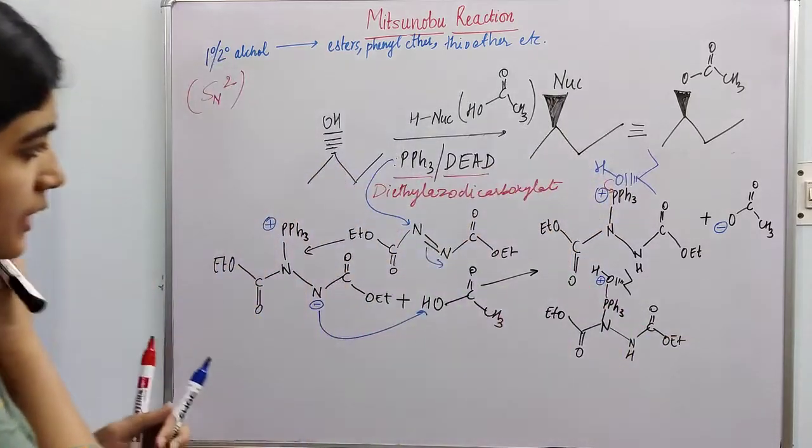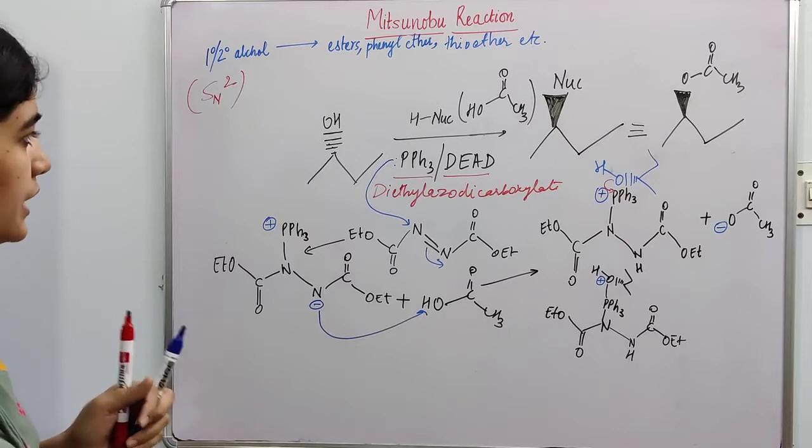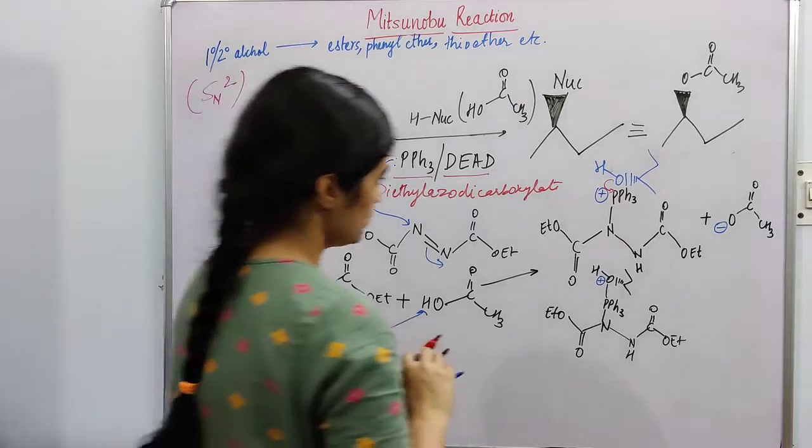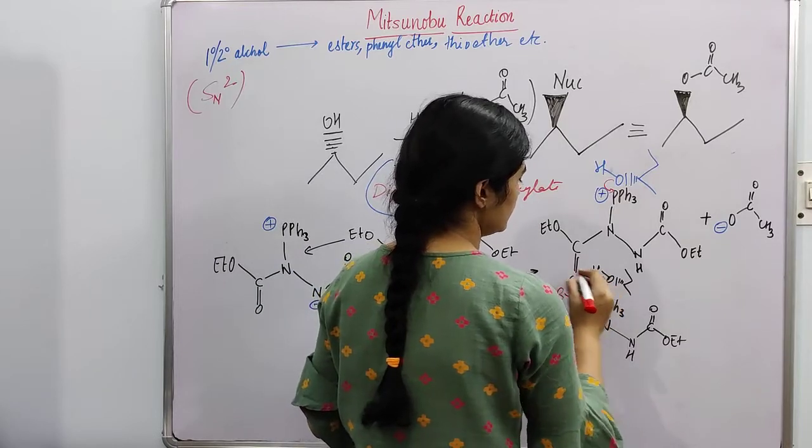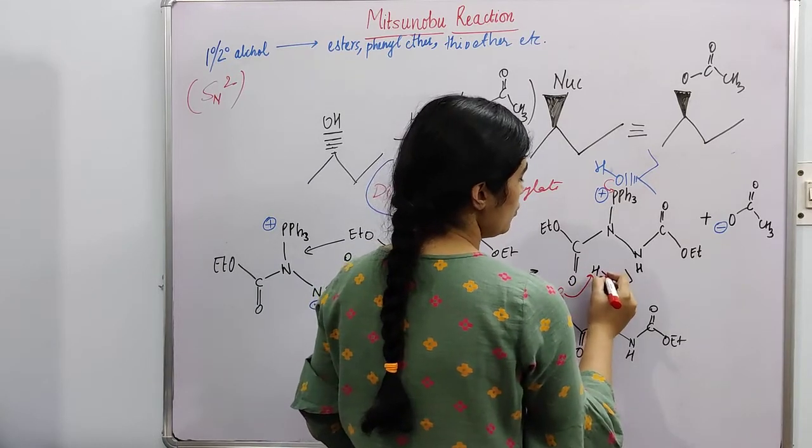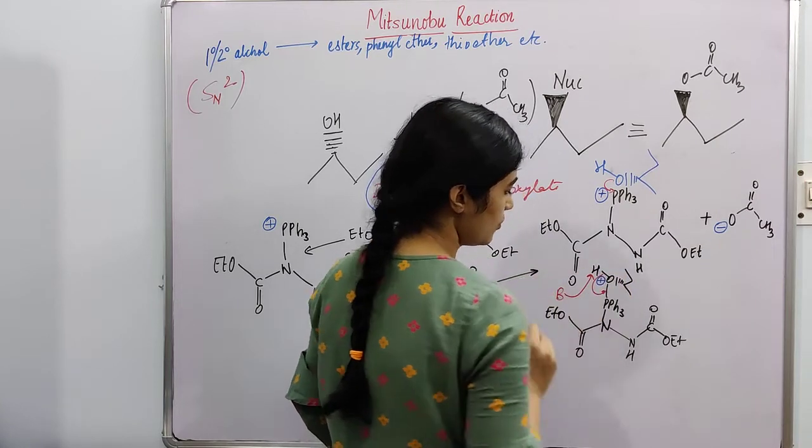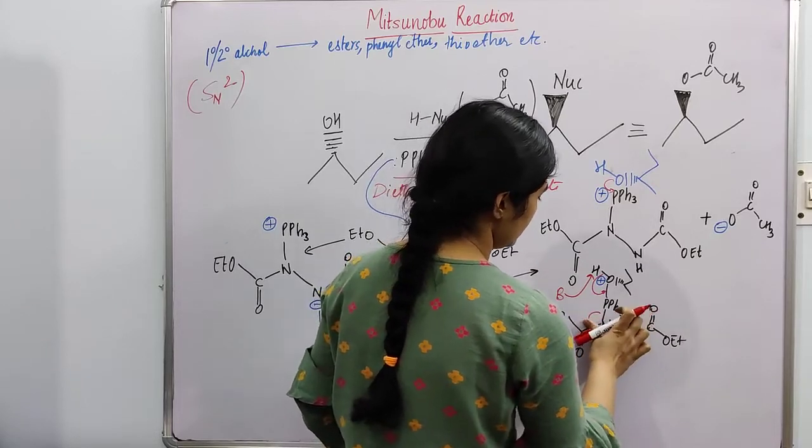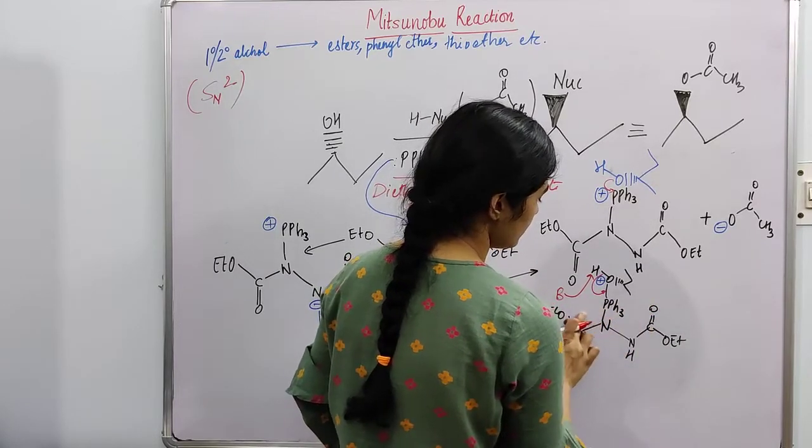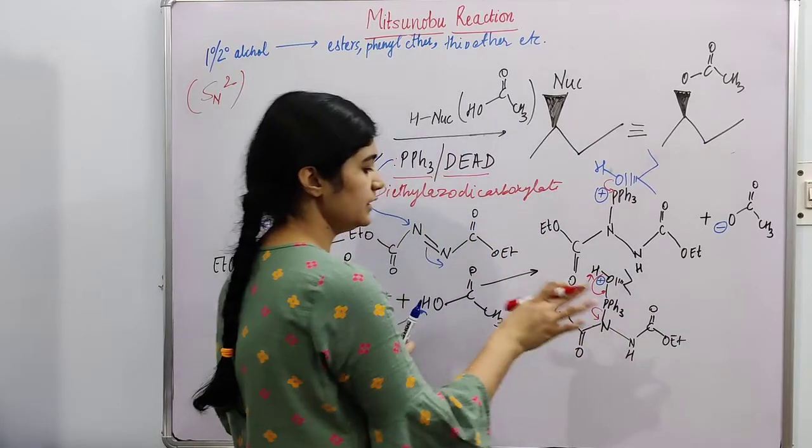Okay, now in presence of the base, we are taking base, and base comes and abstracts this proton. So this electron pair will shift here and form a double bond, and this will leave. This entire group will leave.